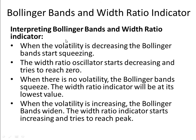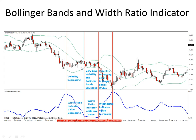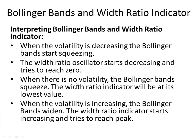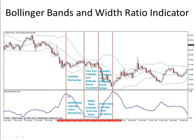How to interpret the Bollinger Bands Width Ratio indicator: when volatility is decreasing, the Bollinger Bands start squeezing, and the width ratio oscillator starts decreasing and tries to reach zero. You can see the upper band and lower band moving closer to each other — the Bollinger Bands start squeezing — and the width ratio indicator shows the same, decreasing from its highest value. When there is no volatility, the Bollinger Bands squeeze and the width ratio indicator will be at its lowest value.